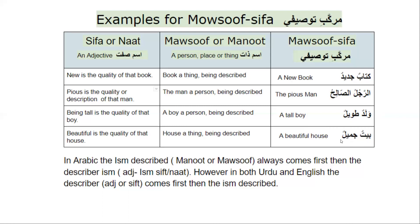Baitun jamilun — a beautiful house. House is a thing. Kitabun is a thing and baitun is a thing, and jamilun means beautiful. Jamilun is the description of that house. In Arabic, the ism described — man'ut or masuf — always comes first, then the describer ism, which is ism sifth or na'at. However, in Urdu and English, the adjective or sifth comes first, then the ism described — like 'beautiful' comes first in English, then comes 'house.' But in Arabic, the described ism comes first and then its quality.